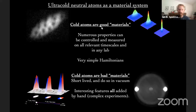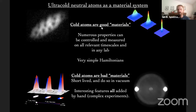However, cold atoms are also bad as materials. They don't live very long — the longest BEC might last 30 seconds before you have to make another one. They live in vacuum systems, so you can't poke and prod them with wires; you have to use lasers, fields, and maybe even electron microscopes to probe them. Lastly, all interesting features at this point are added by hand — if you want artificial gauge fields, you add lasers; if you want lattices, you add optical lattice potentials — making experiments very complicated.